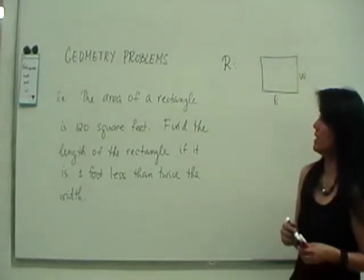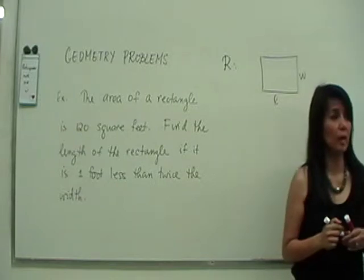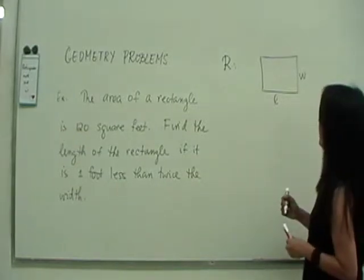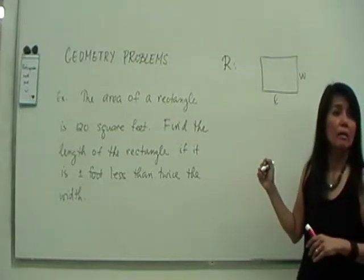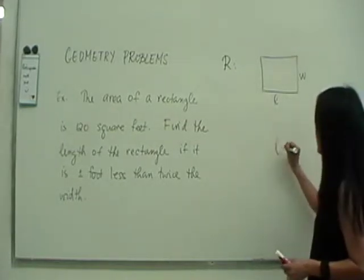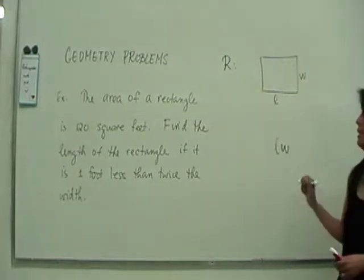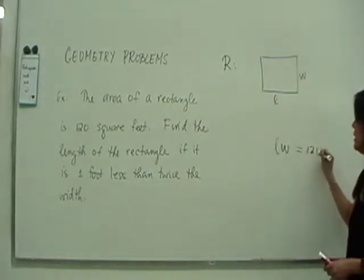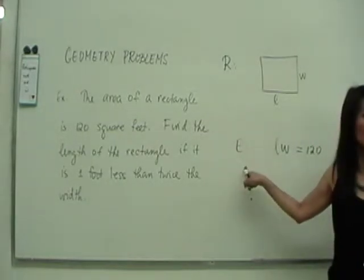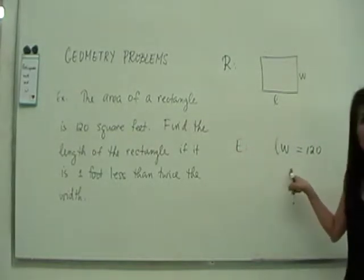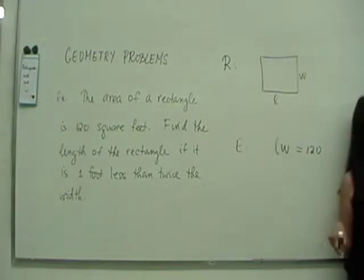The first sentence is the area is 120 square feet. What is area? Do you guys know what area is? Length times width. It's the formula is length times width, and that's going to be 120, is equal to 120. And actually you're now doing your equation. So you knew something.